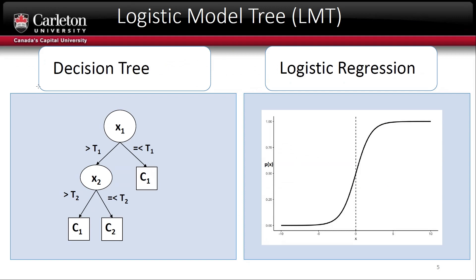The most important question now: what is a logistic model tree? The simple definition is a decision tree with logistic regression at the leaves. The importance of logistic regression at the leaves is that it gives us classification probability, which is an important feature for any real-time classification problem.